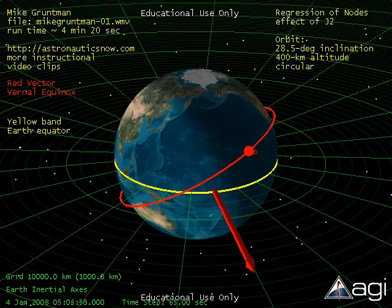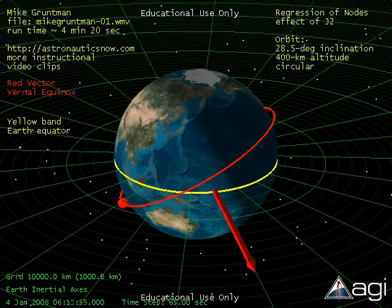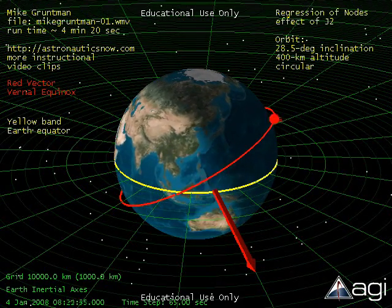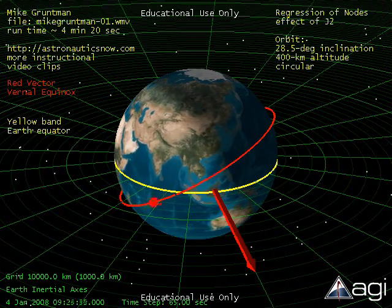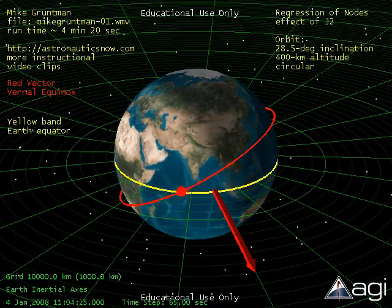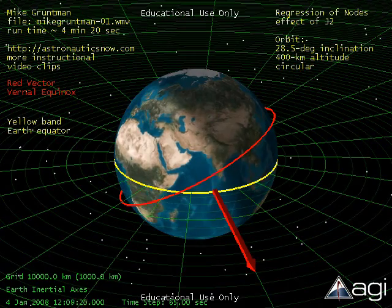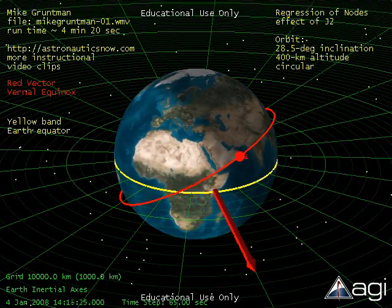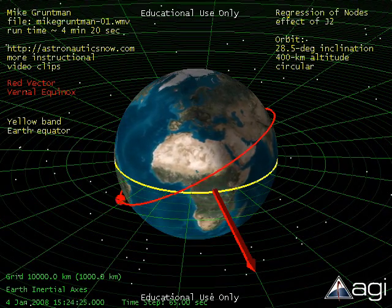If one looks at the rotating Earth from the north, the planet rotates in the counterclockwise direction. In our example, the satellite orbits the Earth also in the same direction. Such orbits are called prograde. Note that the line of nodes precesses in the direction opposite of the Earth rotation.